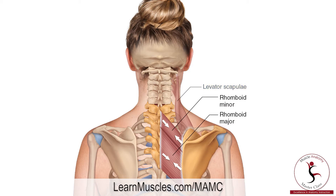The proximal attachments of the rhomboids are on to the spinous processes of C7 down through T5.